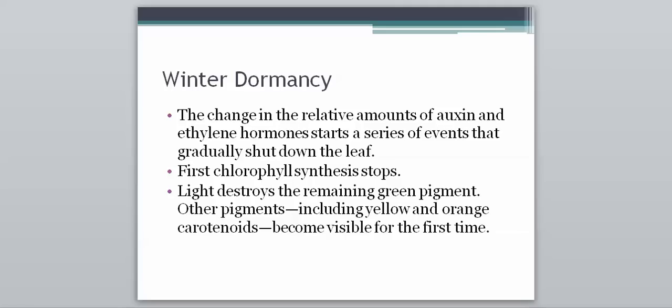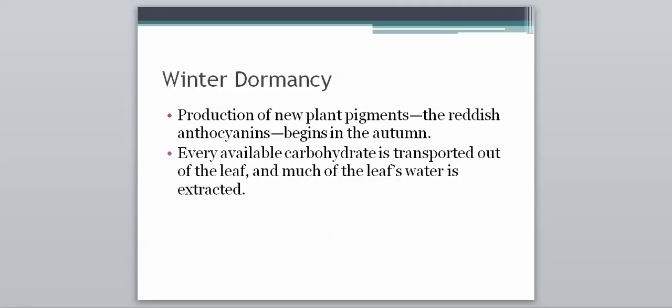First, chlorophyll synthesis stops — the making of chlorophyll just comes to an end. Light destroys the remaining green pigment. Then other pigments, including yellow and orange carotenoids, which are usually blocked by chlorophyll, become visible for the first time. The production of new plant pigments — the reddish anthocyanins — begins in autumn. Every available carbohydrate is transported out of the leaf as much of the leaf's water is extracted.